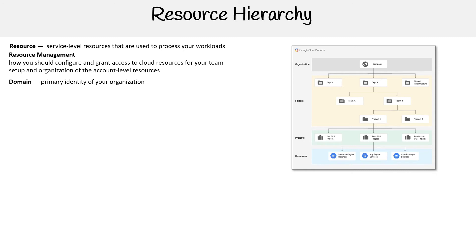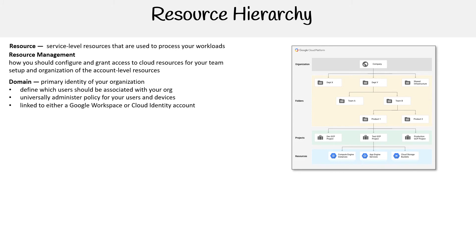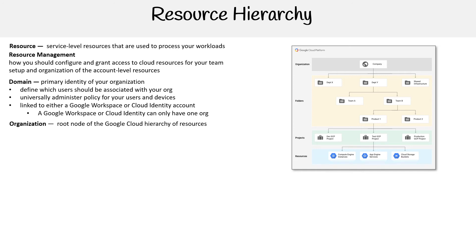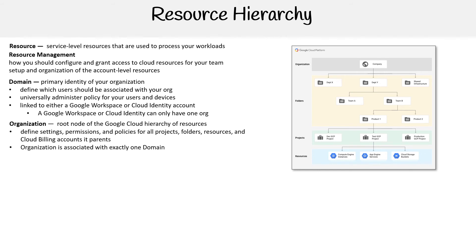You have domains — the primary identity of your organization, defining which users should be associated with your org. They are universally administered policy for your users and devices, linked to either a Google Workspace or Cloud Identity account. A Google Workspace or Cloud Identity account can only have one org. Then you have organizations — these are the root nodes of your Google Cloud hierarchy of resources. You can define settings, permissions, and policies for all projects, folders, and resources. The cloud billing account's parent organization is associated with exactly one domain.